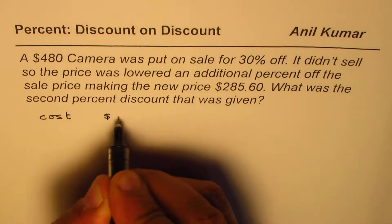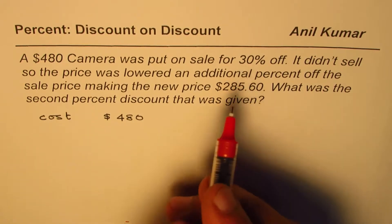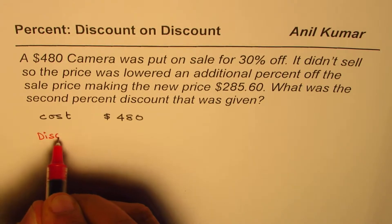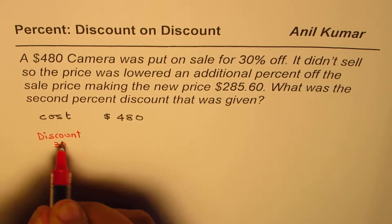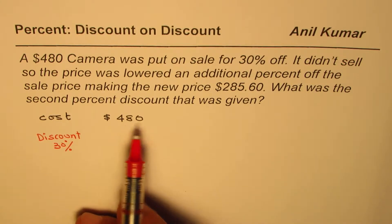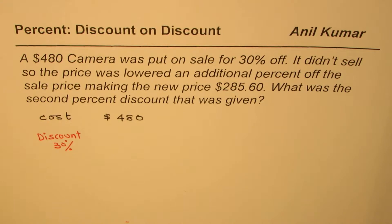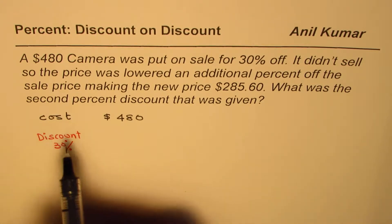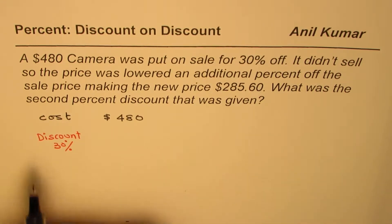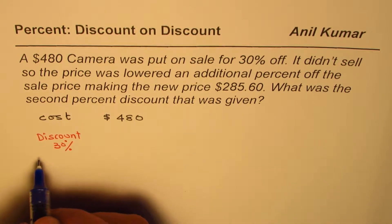To begin with, the cost of the camera is $480. On this cost we are offering a discount of 30%. One way is to calculate 30% of 480 and subtract that value to get the price after discount. The other way is to find the discounted price directly, and this is what we are going to learn here. Let me write down the discounted price.